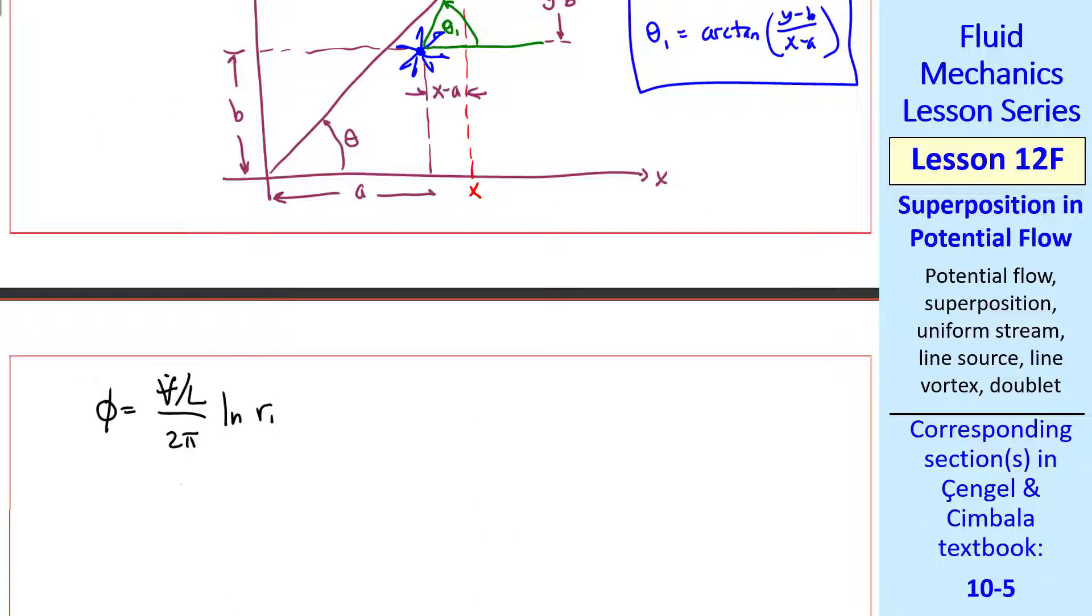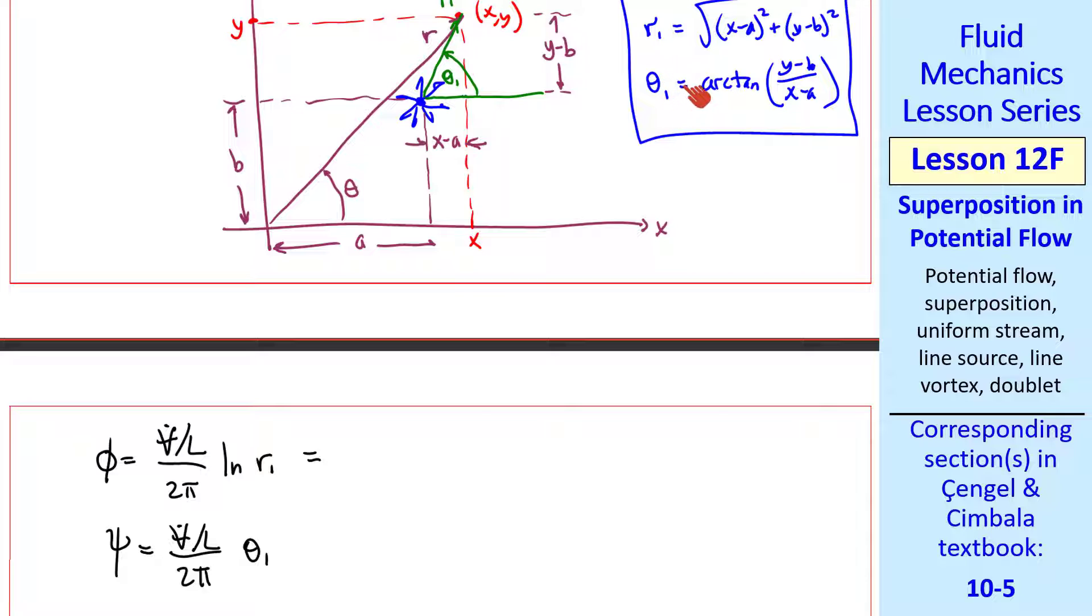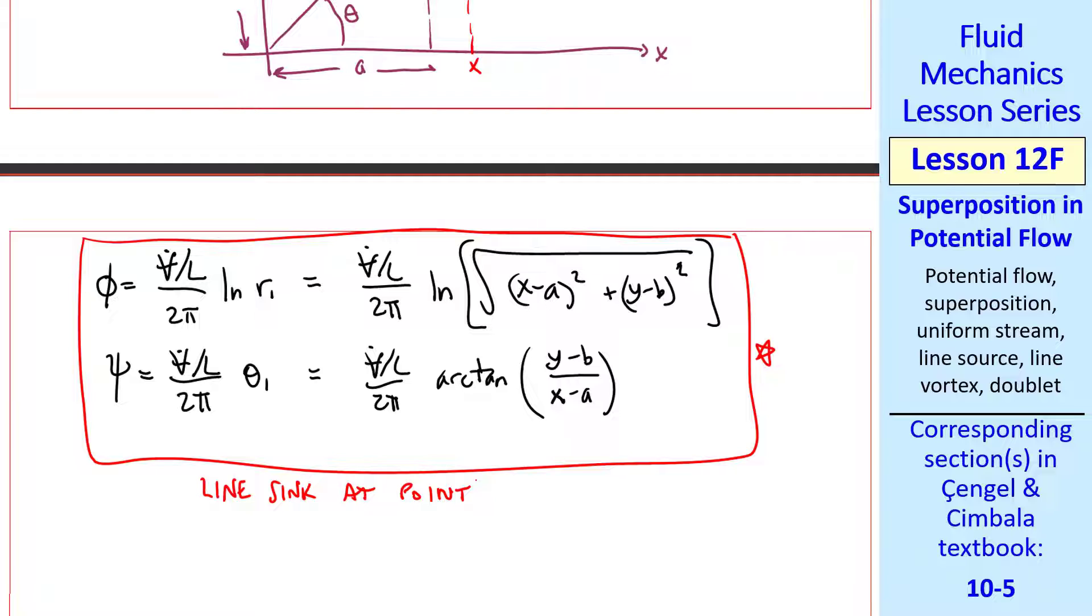And when we plug into these equations, we use r1 and theta 1, since we've kind of shifted the origin of the source relative to our point. Thus, we write phi equal v dot over L over 2 pi, natural log of r1, and psi equal v dot over L over 2 pi theta 1. Plugging in our r1 and theta 1, we get expressions for phi and psi. These are the equations for a line sink at x, y equal a, b.